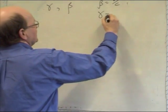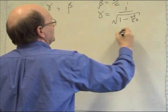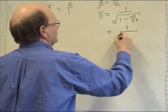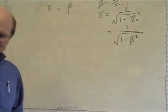And gamma equals 1 over the square root of 1 minus v squared over c squared, which is 1 over the square root of 1 minus beta squared. Alright? Now,